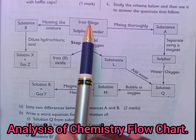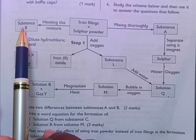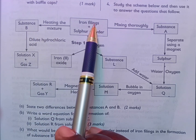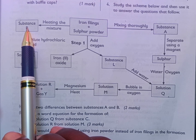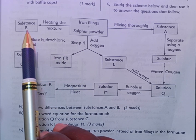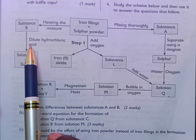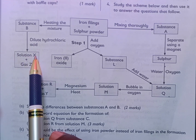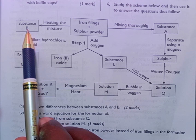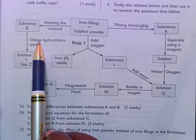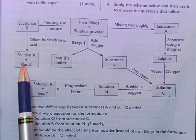The flowchart begins from where we have iron filings plus sulfur powder. The two are heated and substance B is formed. When we combine iron and sulfur chemically, you get iron(II) sulfide, which is a compound. Then iron(II) sulfide is reacted with dilute hydrochloric acid to form solution X plus gas Z, which is hydrogen sulfide.